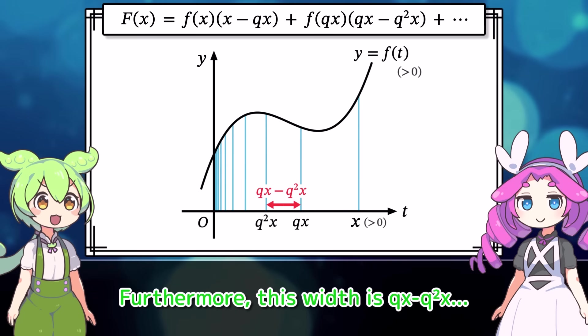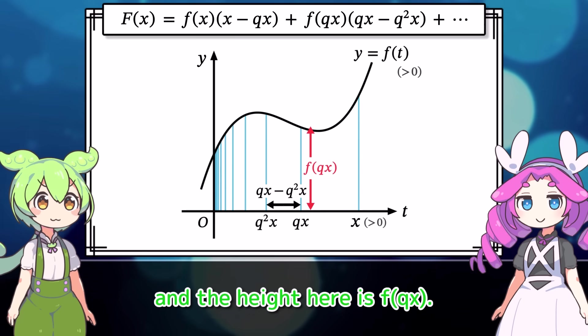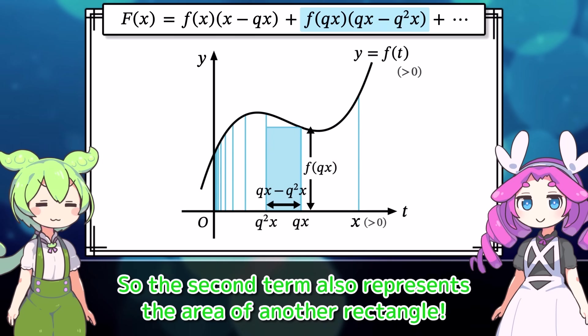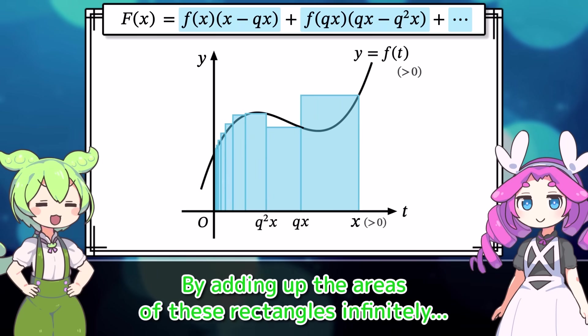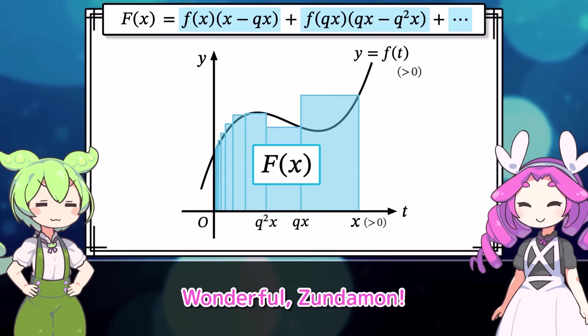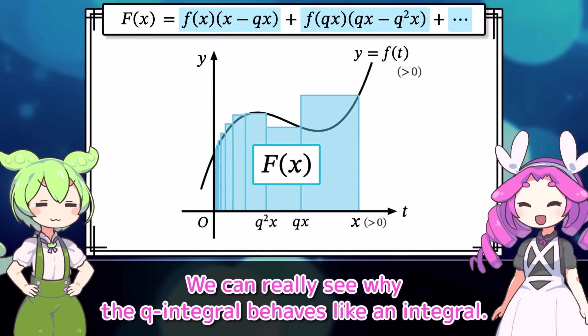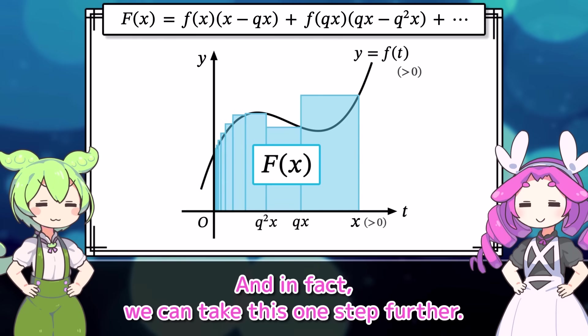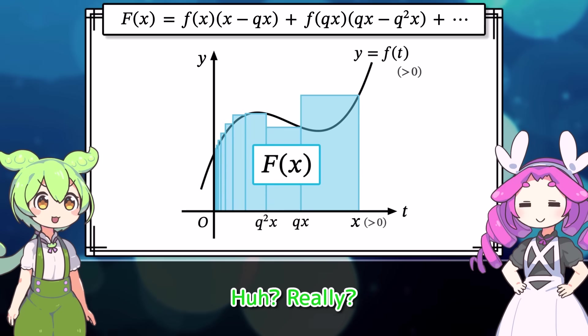Yeah. Furthermore, this width is qx minus q squared x. And the height here is f of qx. So the second term also represents the area of another rectangle. By adding up the areas of these rectangles infinitely, we get the true form of the q integral, capital F of x. Wonderful, Zundeman. We can really see why the q integral behaves like an integral. And in fact, we can take this one step further.